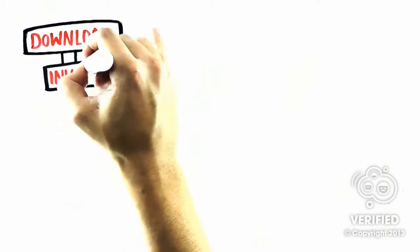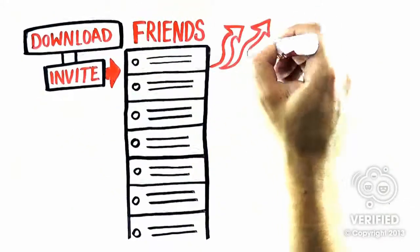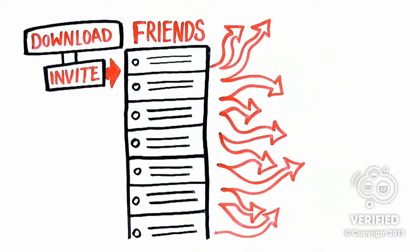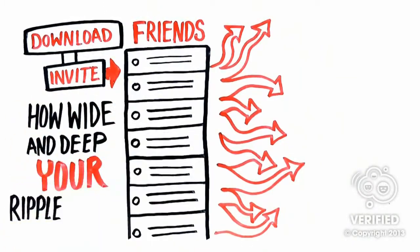Let me show you how it works. First, you download the Ripplin app. Then within the app, you can invite all of your friends and followers to do the same. As they spread the word, we'll track everything, showing you just how wide and how deep your ripple runs.